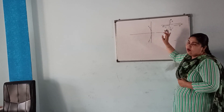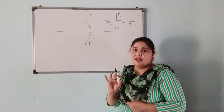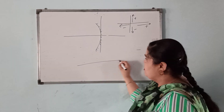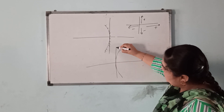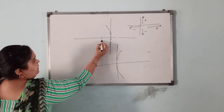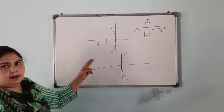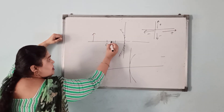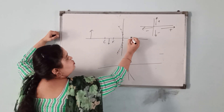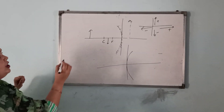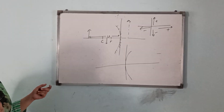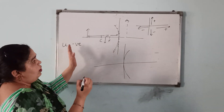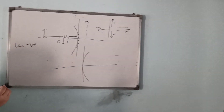This is our rectangular coordinate system. According to this system, this side is positive and this side is negative. Light always comes from the left side only. U is always on the left side, so U is always negative according to this rectangular coordinate system.